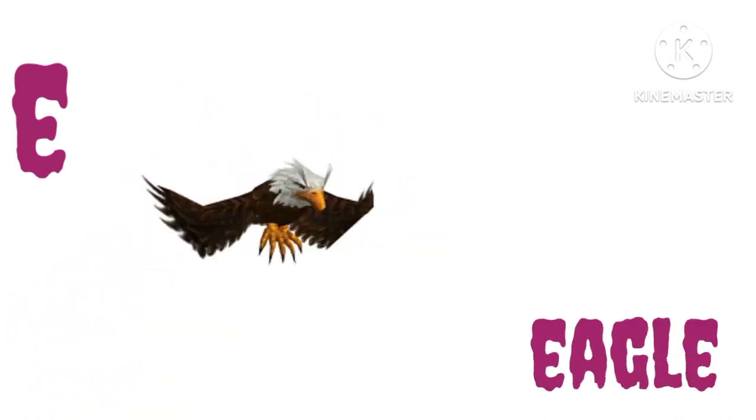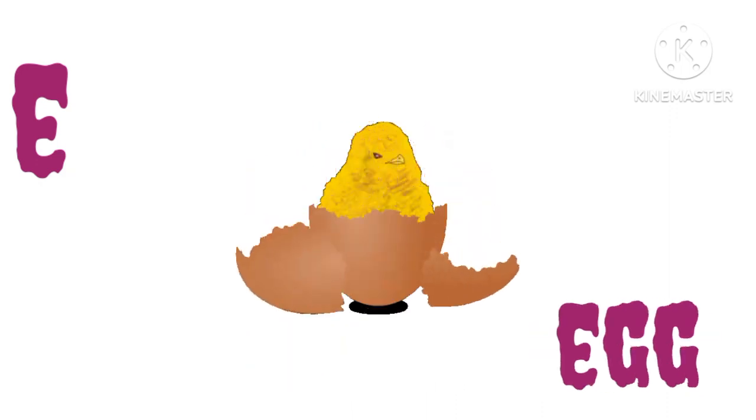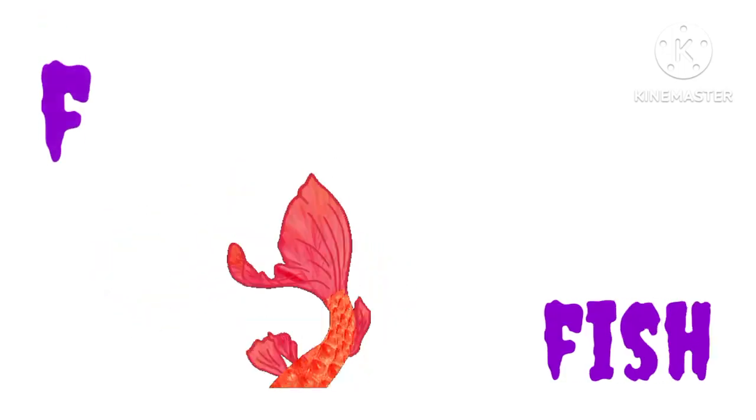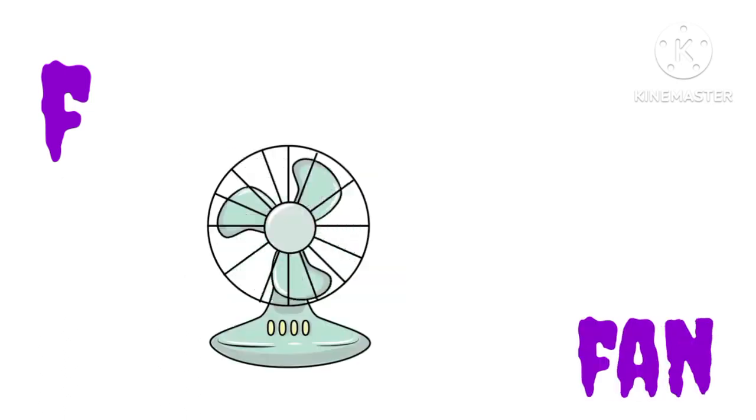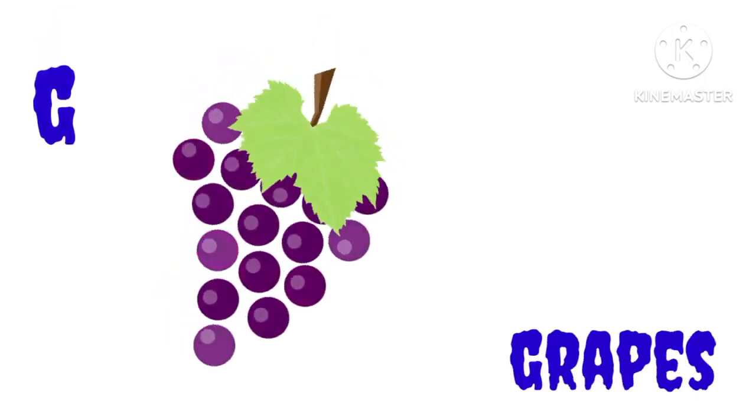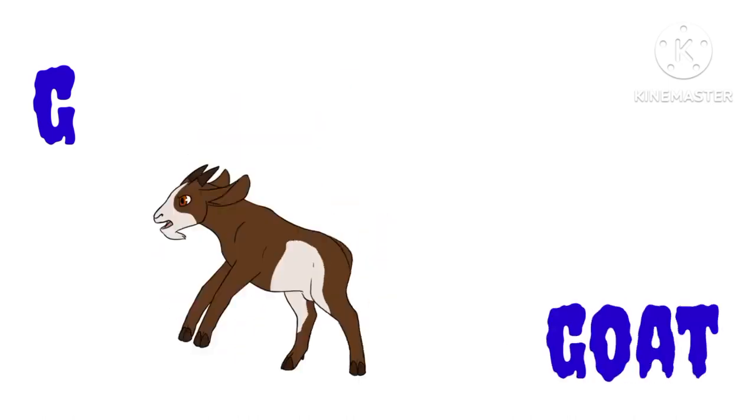E for elephant, E for eagle, E for egg. F for fish, F for fruits, F for fan. G for grapes, G for goat, G for girl.